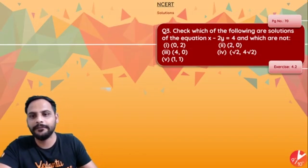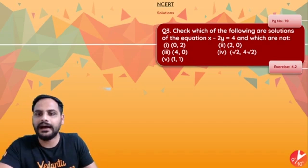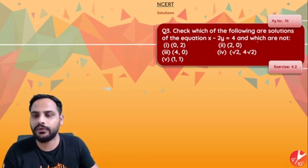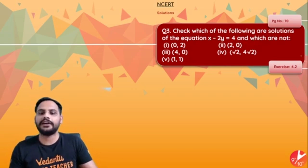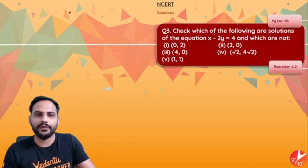First question they are saying, check which of the following are solutions of this equation x minus 2y equal to 4 and which are not. So we have the equation x minus 2y is equal to 4.